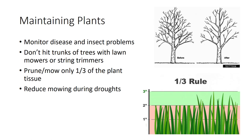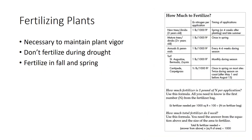During drought periods, raise the normal mowing height 25 to 50 percent. The proper fertilization is necessary to maintain good plant vigor; however, it can be harmful during drought periods when water is limited. If plants need nutrients, delay fertilization until fall or spring when conditions are more ideal and there is enough water available for plants to easily absorb the nutrients. Reducing resources for fertilization and pest control are also important for sustainable landscaping.